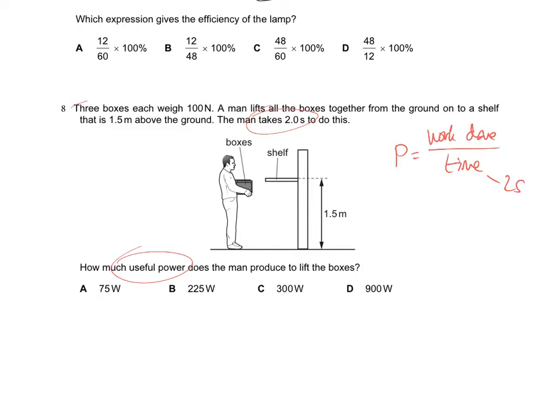Now be careful, some of you might not spot this, but it lists 3 boxes each weighing 100. So remember, work done is force times distance. If the total weight down of these is 300 newtons, this person is going to have to apply at least 300 newtons upwards. So the force that he applies is 300. The distance moved is 1.5, so we can work out the work done, which is 450 joules.